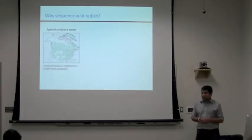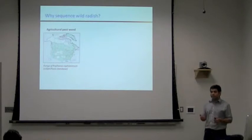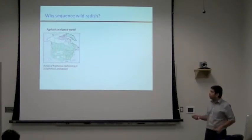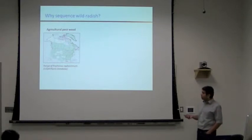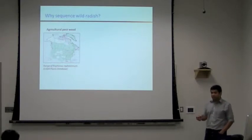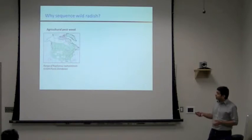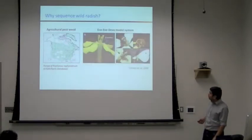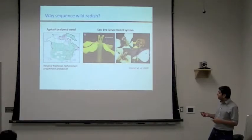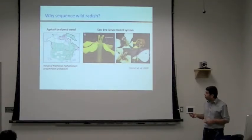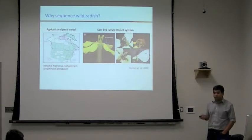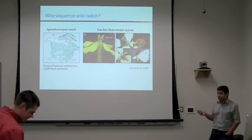Wild radish is a species we know of in cultivated form, consumed in large parts of the world. But wild radish is considered an agricultural pest in the United States. It has a strong root system and is used as a model for studying secondary metabolites. It is spread all over large parts of North America. At MSU, Dr. Connor has been studying this for a long time.